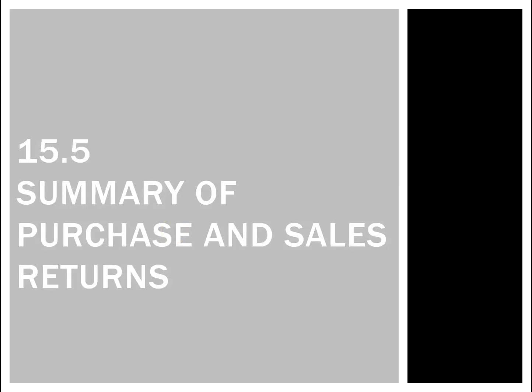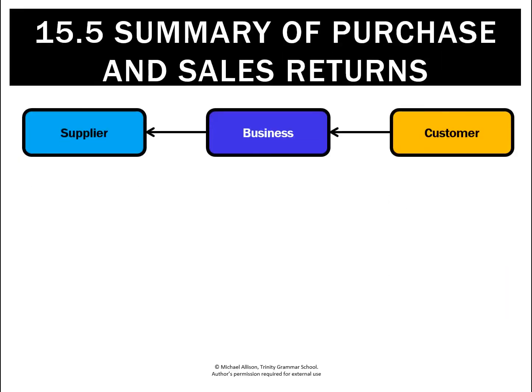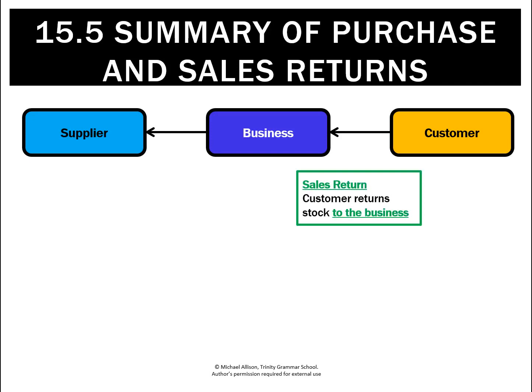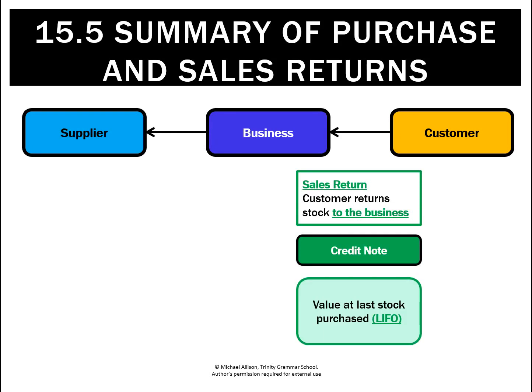Let's summarize the chapter of purchase returns and sales returns. When goods come back from the customer to the business, that's called a sales return, and the document we issue is called a credit note. We value those at the last stock purchased, called LIFO, until they've all been returned, and then we move back to the next most recent amount.